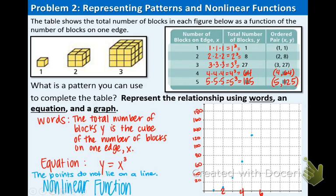This is a nonlinear function, so make sure you write that down. You may be wondering if we are connecting those points. Think about the situation: x is the number of blocks on an edge, and y is the total number of blocks in the figures. We're not going to connect them because we can only have whole numbers on each edge — it doesn't make sense to have half a block on each edge. We're doing 1, 2, 3, 4, 5, etc. So that's why we are not connecting those points.